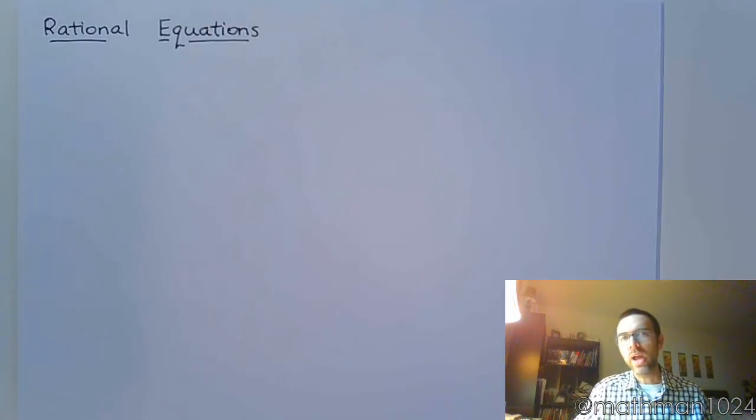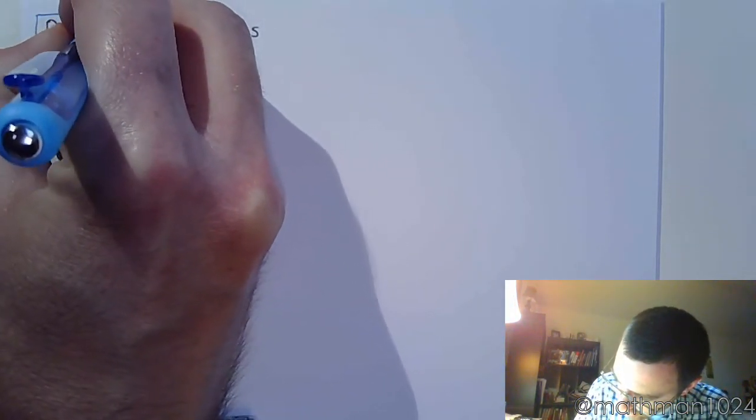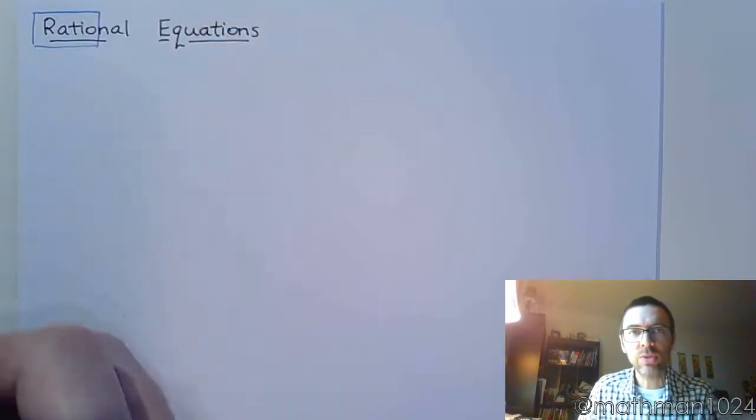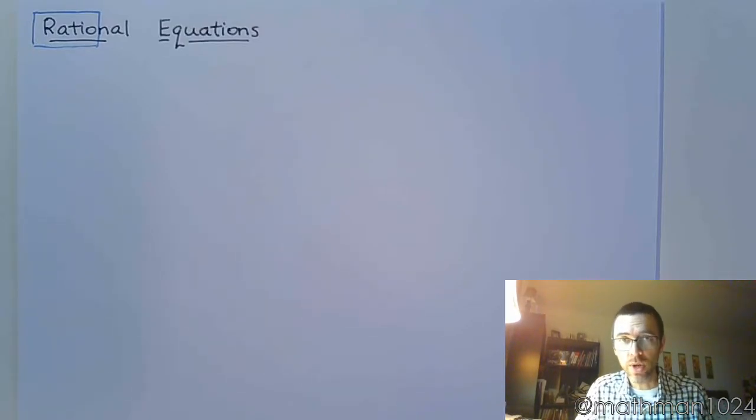Starting with rational equations. Whenever you see the word rational, you need to see the word that is hidden in here, and that's the word ratio. When we're talking about ratios, we're talking about fractions. So when you see rational equations, we're talking about equations that contain fractions.